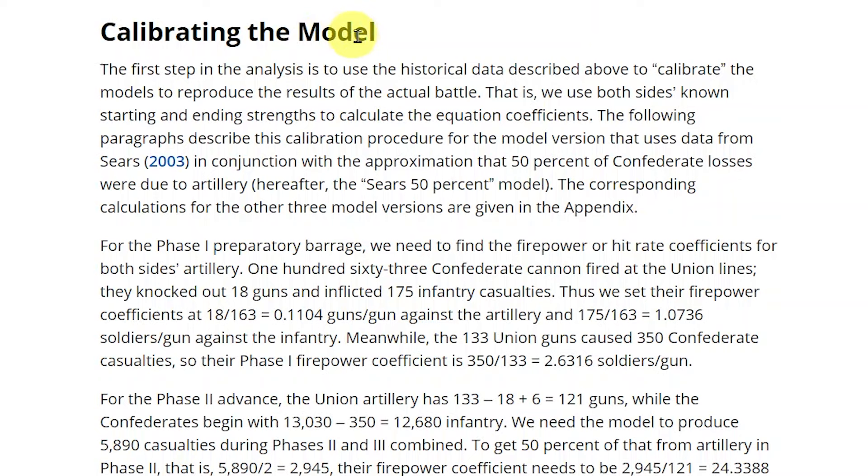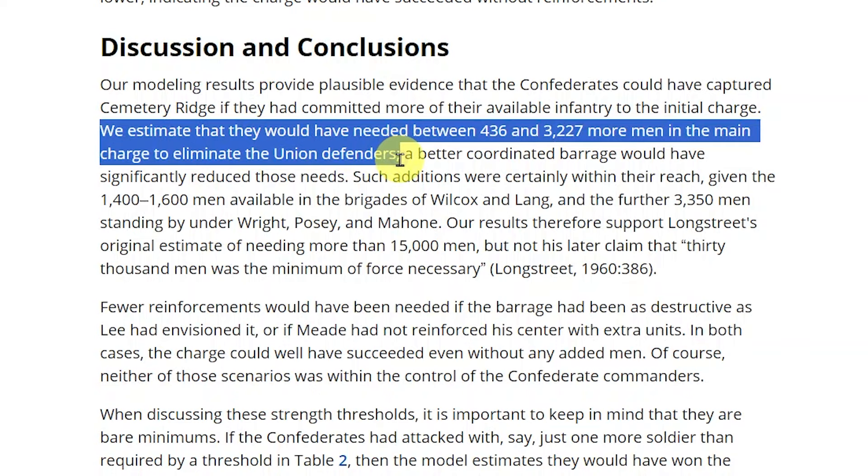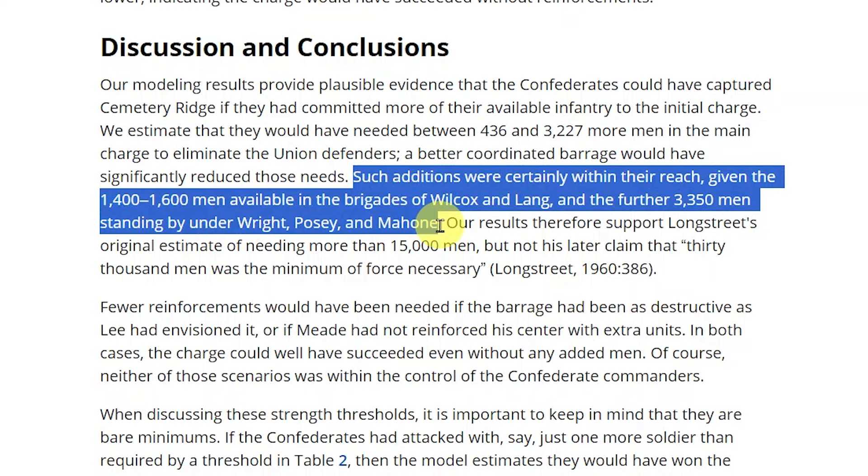And their ultimate prediction was that with somewhere between hundreds and thousands of extra men, men that were available in the vicinity of the battlefield, it could have been the case that Pickett's charge in this battle actually would have worked out.